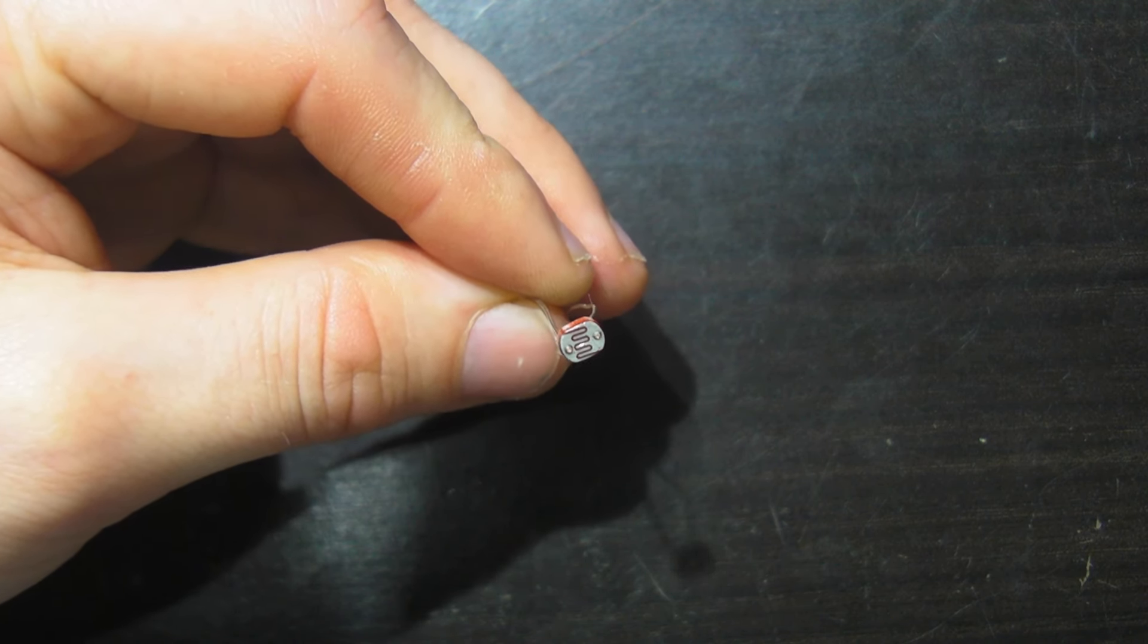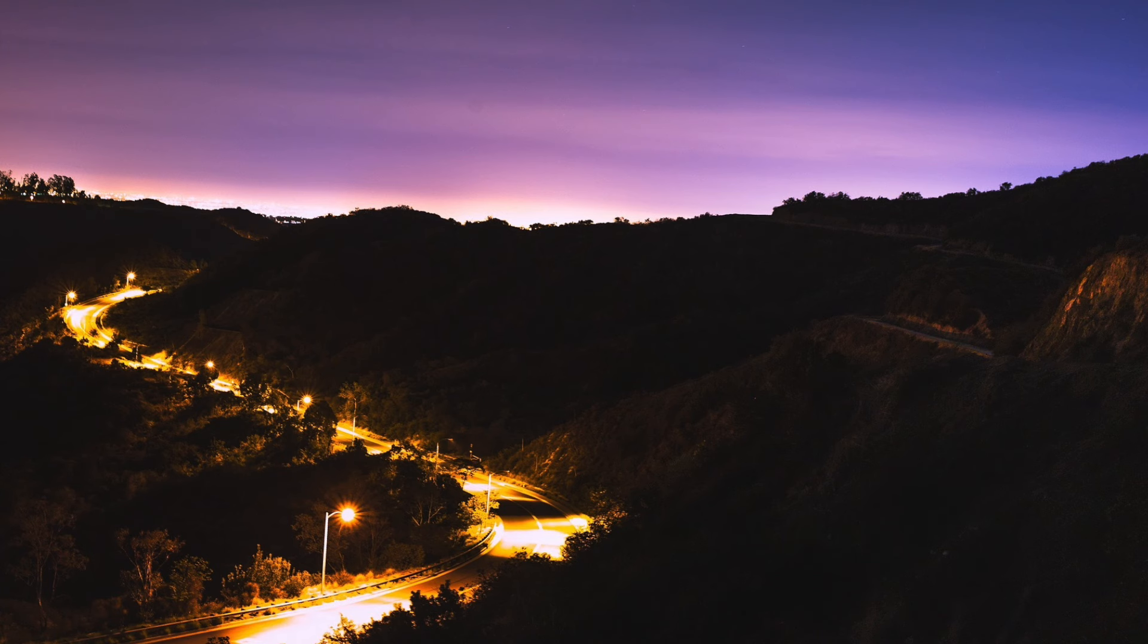For example, street lights. Street lights need to know when it's light or dark outside, so that they know when to turn on, and when to turn off.